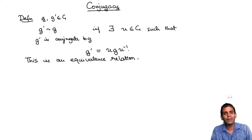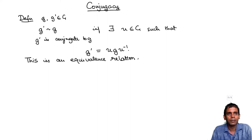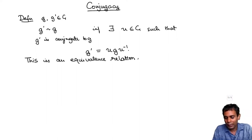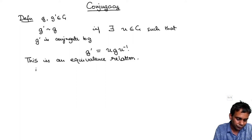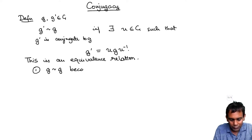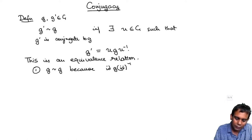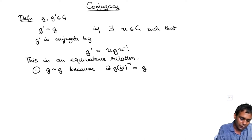To check that something is an equivalence relation, we need to check three things: reflexivity, transitivity, and symmetry. First, let's check reflexivity. Given an element g in G, is it conjugate to itself? Yes: can we find u such that u g u inverse equals g? Just take u equal to the identity. Then identity times g times identity inverse is just g. So conjugacy is reflexive.